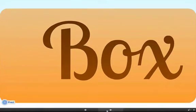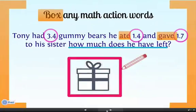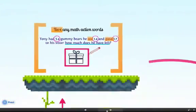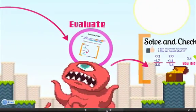Then, it's boxing. Box any math action words: subtraction, addition, division, multiplication. Here, we see that he ate 1 and 4 tenths and he gave 1 and 7 tenths. So he subtracted.